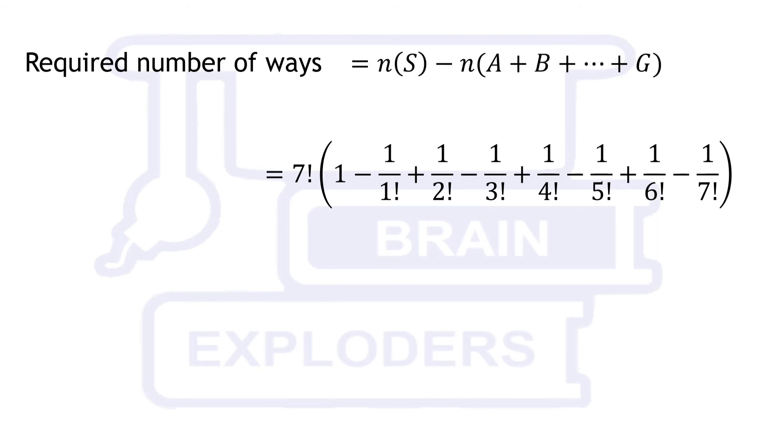This format can be directly applied for these types of derangement problems means to calculate the number of permutations of some objects such that no object occupies its own position. For this particular problem, we have 1854 ways and this was our solution.